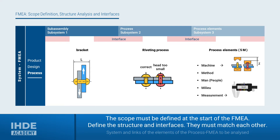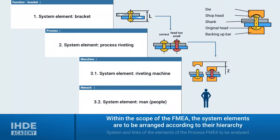A system element below the bracket would be the riveting process step. Below this system element would come the various process elements such as the machine, the method, the human, the measurement, or the environment — also known as the 5M. Relevant system elements must then be defined through a structural analysis, which results in a hierarchy. These system elements are numbered consecutively and linked together in a structure net or structure tree.